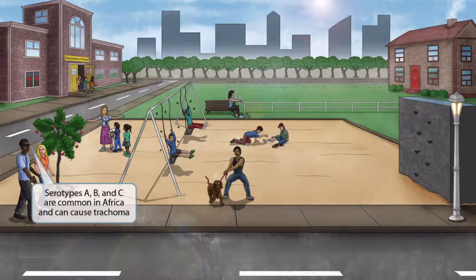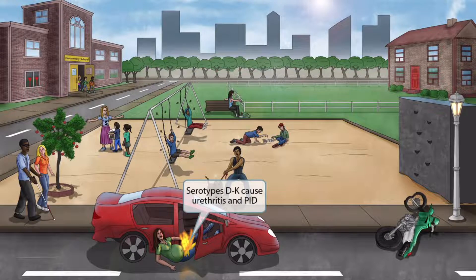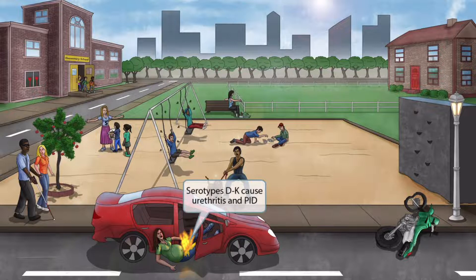Trachoma is characterized by roughening of the eyelid surface, which then damages the cornea and eventually leads to blindness. For serotypes D through K: a pregnant woman driving a red car swerved to avoid the blind man and crashed into a dirt bike. The pregnant woman has partially fallen out of the car with her pelvis on fire — this helps you remember pelvic inflammatory disease (PID). The dog nearby indicates that serotypes D through K cause urethritis and PID.